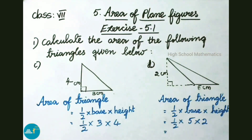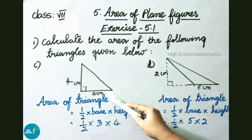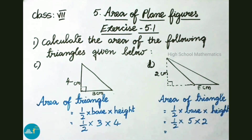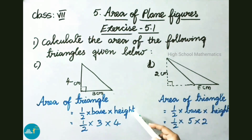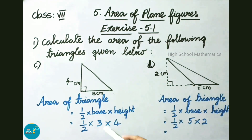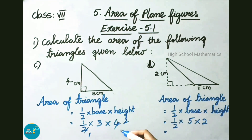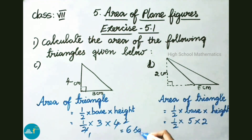See now question C. Here in the given triangle, base is 3 cm and height is 4 cm. Area of triangle equals to half into base into height, that is half into 3 cm into 4 cm. After cancellation, that equals to 3 into 2, which is 6 square centimeter.